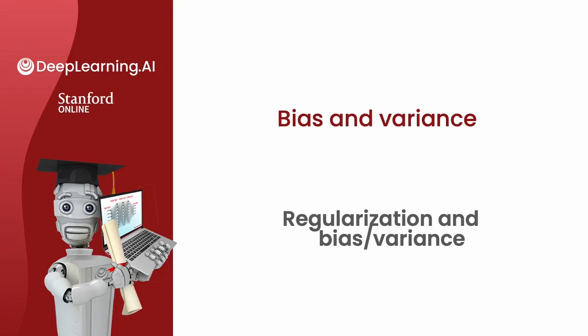In the last video, we saw how different choices of the degree of polynomial D affect the bias and variance of a learning algorithm and therefore its overall performance. In this video, let's take a look at how regularization — specifically the choice of the regularization parameter lambda — affects the bias and variance, and therefore the overall performance of the algorithm. This will be helpful for when you want to choose a good value of lambda.